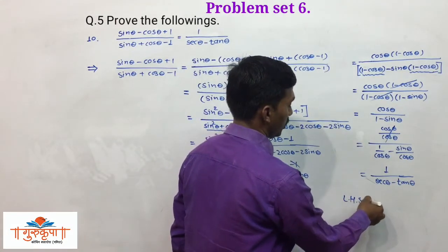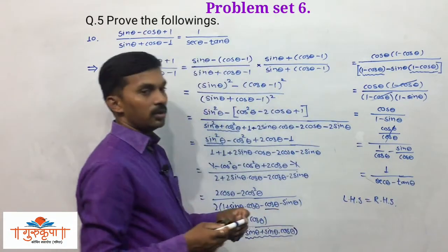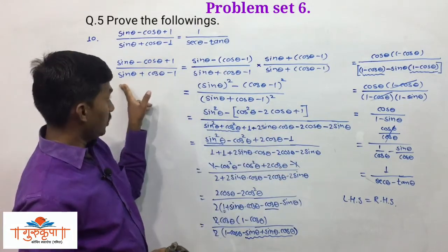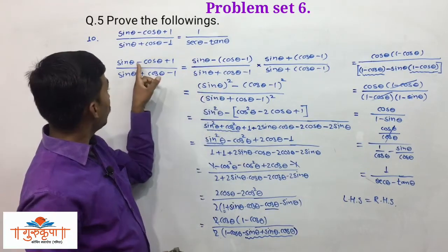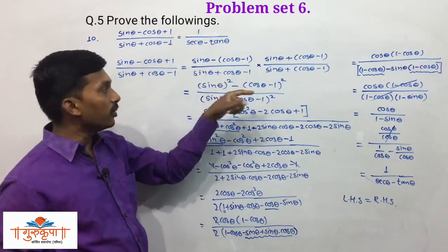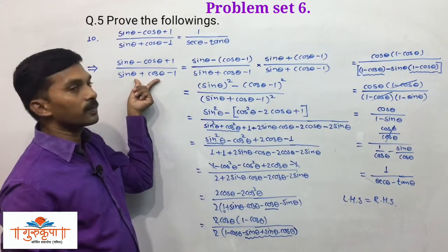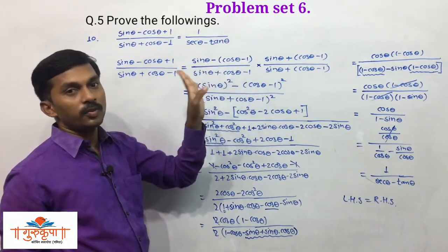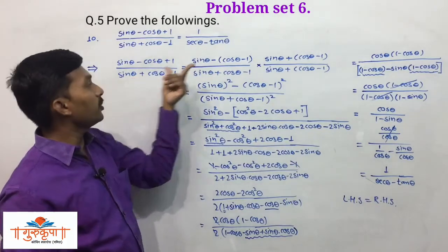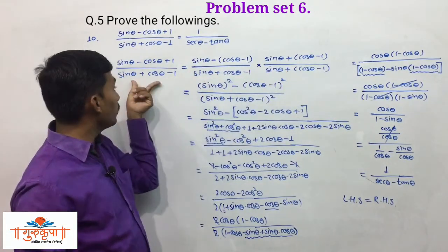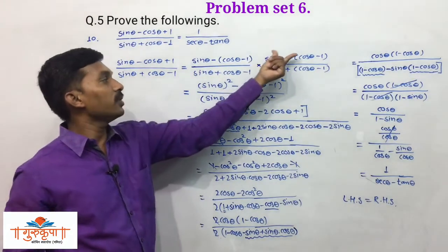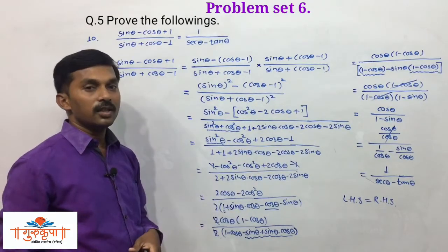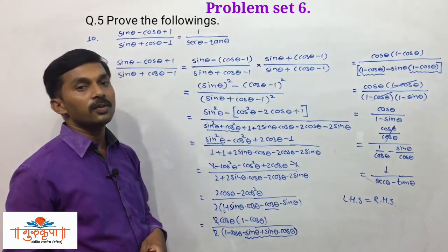So LHS equals RHS. This is a very important example, and we simplified it easily. The key adjustments in the first steps are very important: from the numerator we take minus sinθ common, then multiply numerator and denominator by the same number (without rationalization), simplify, and get 1/(secθ - tanθ) which is the RHS. This is all about example number 10.